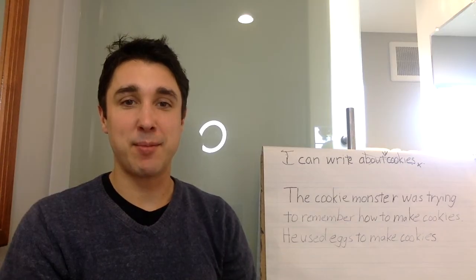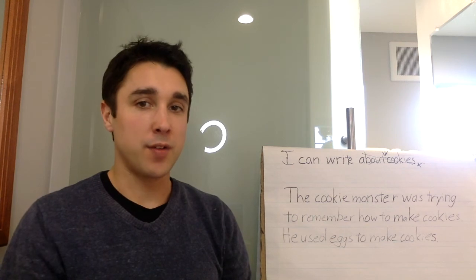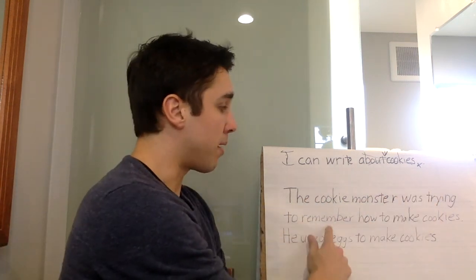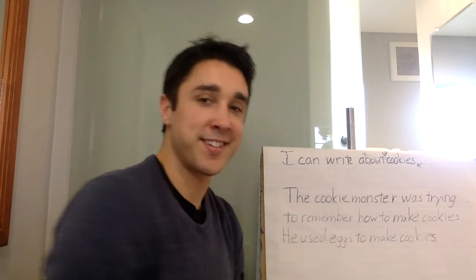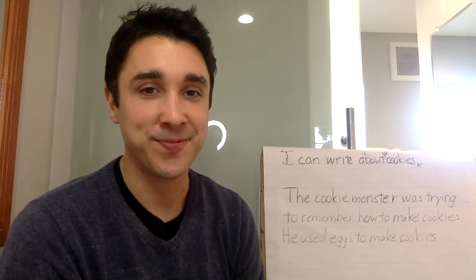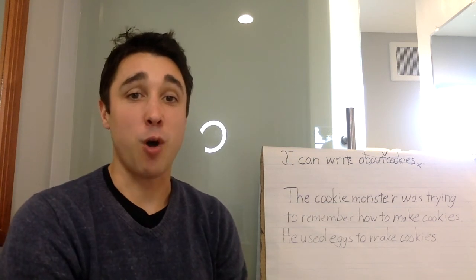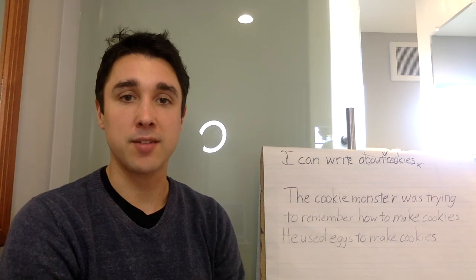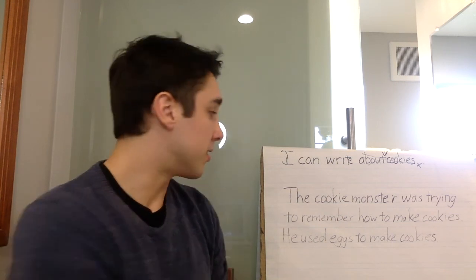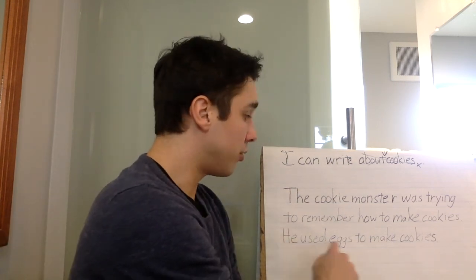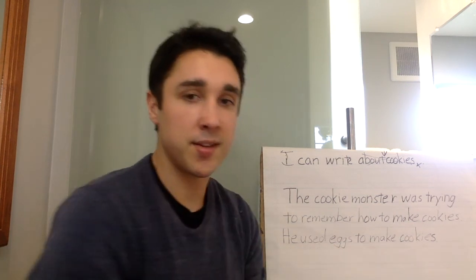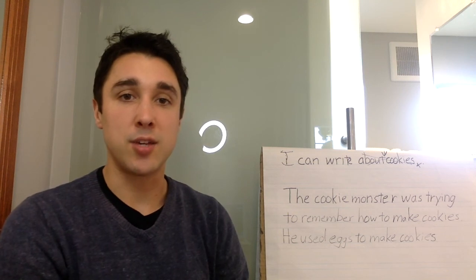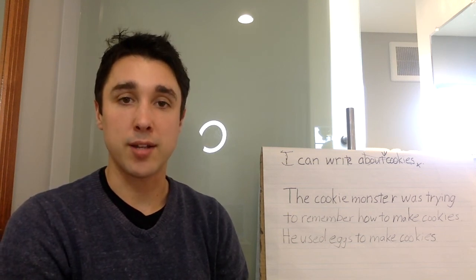Alright, answer time — let's see if you guys got it. So Kindergarten, this is your sentence: The Cookie Monster was trying to remember how to make cookies. That's a long one — did you guys get it all? Awesome job, Kindergarten. First grade, that could also be one of your sentences. But the next sentence is: He used eggs to make cookies. So I chose to say that he used eggs as one of the ingredients in his cookies.